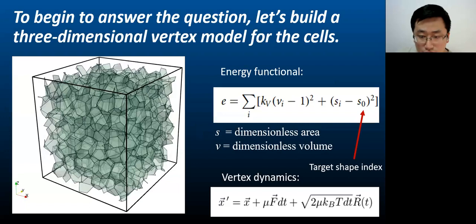To begin to answer the question, we can use a 3D vertex model to study structure formation at the cellular scale in spheroids. Such models are the models with cells represented as deformable polyhedrons, and there are no gaps between them. We can make quantitative predictions regarding the morphology and rheology of spheroids with this model.